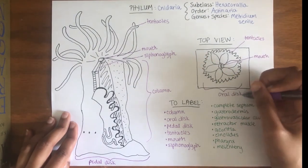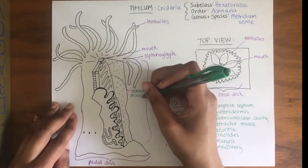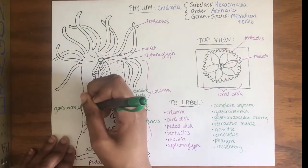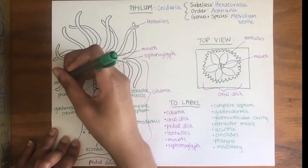and tentacles. Finally, let's label the internal anatomy features in green. Our anemone drawing is complete.